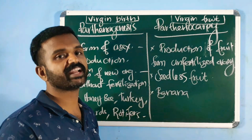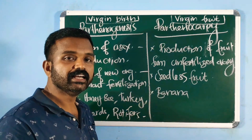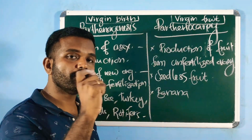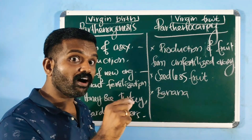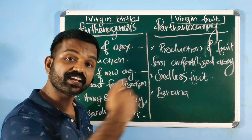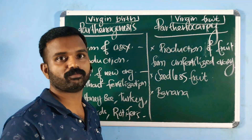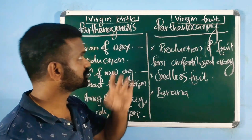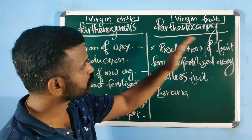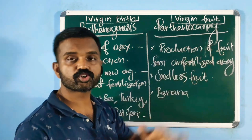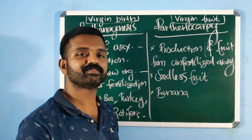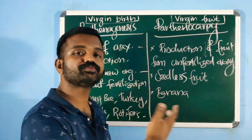In Parthenogenesis, the female gamete directly develops to form a new organism, which is why it is known as virgin birth. It is a form of asexual reproduction where new organisms are formed. Parthenocarpy, meaning 'virgin fruit,' is the production of fruit from an unfertilized ovary — remember, there is no reproduction here, it is only a process of fruit formation.